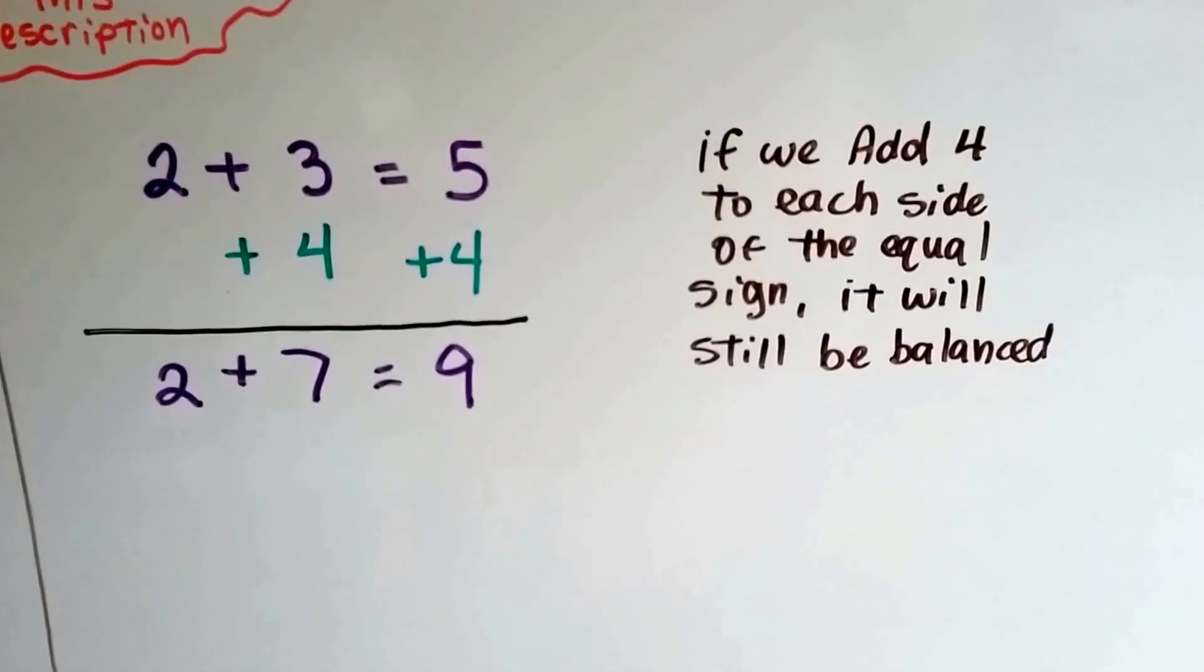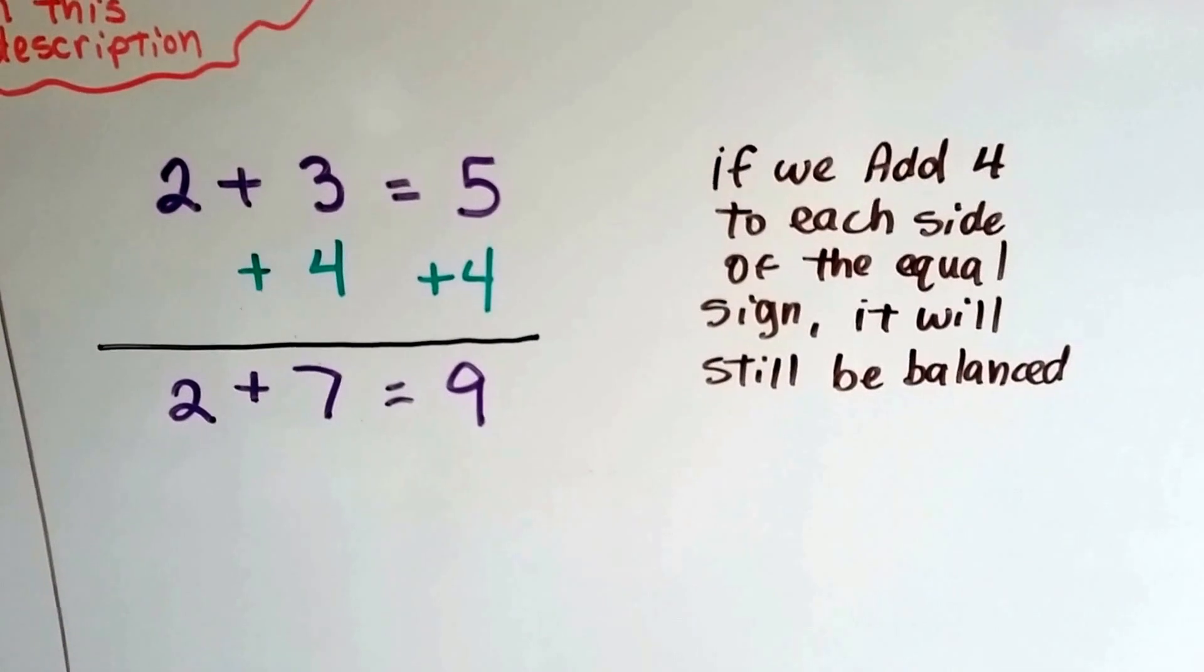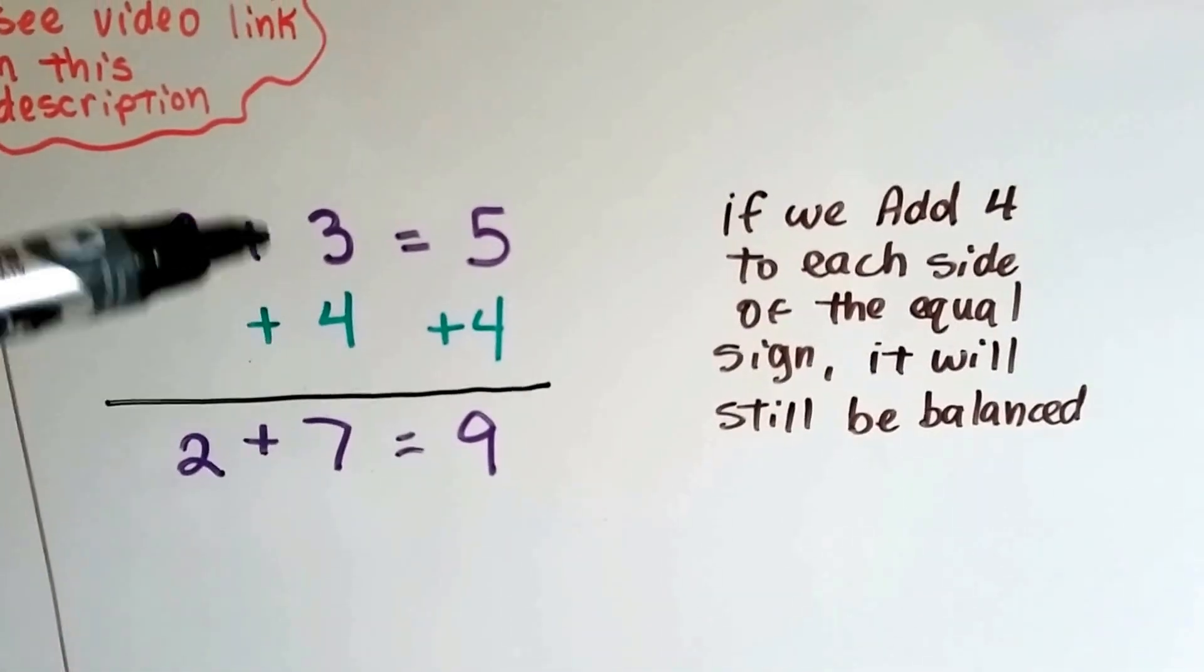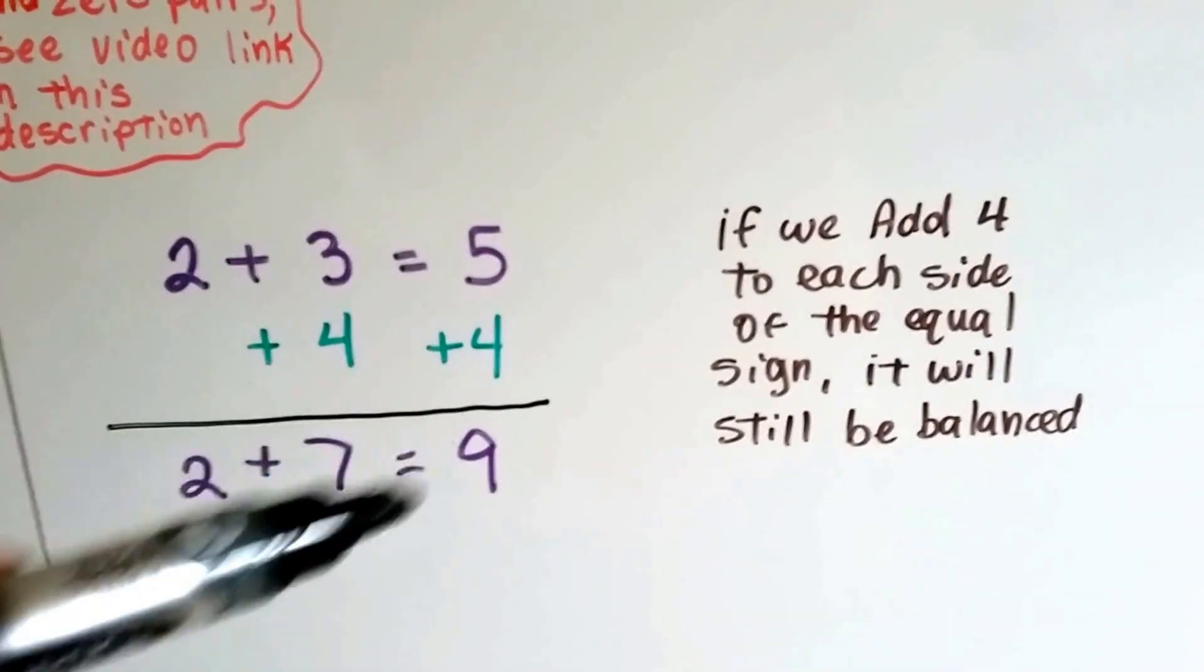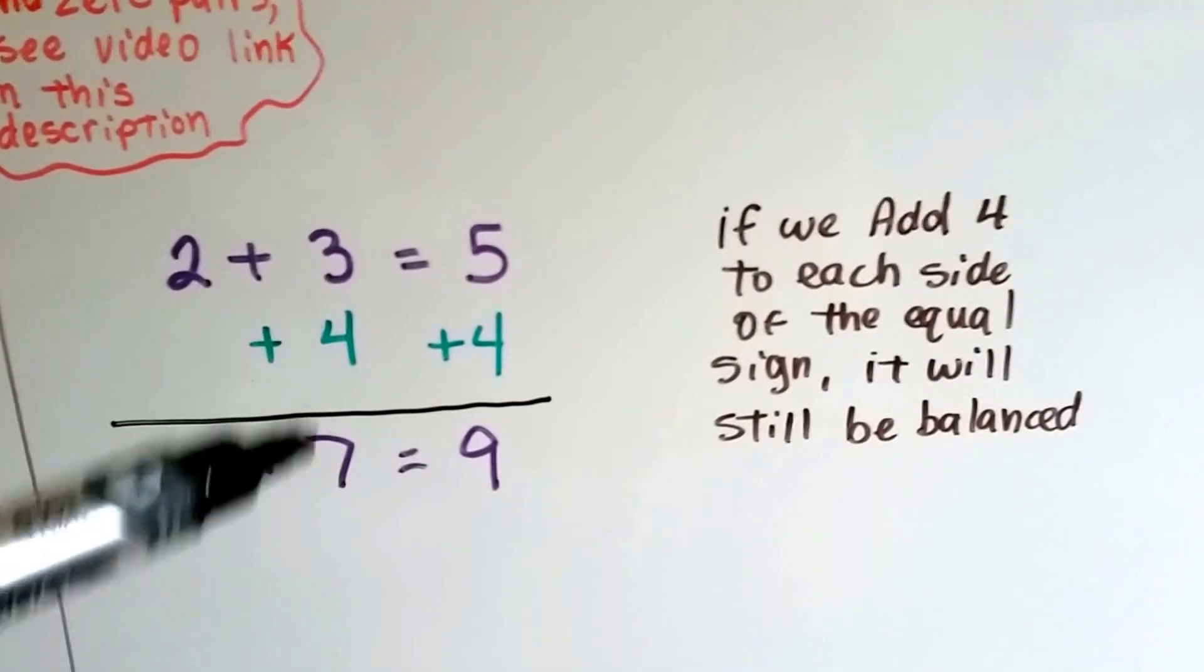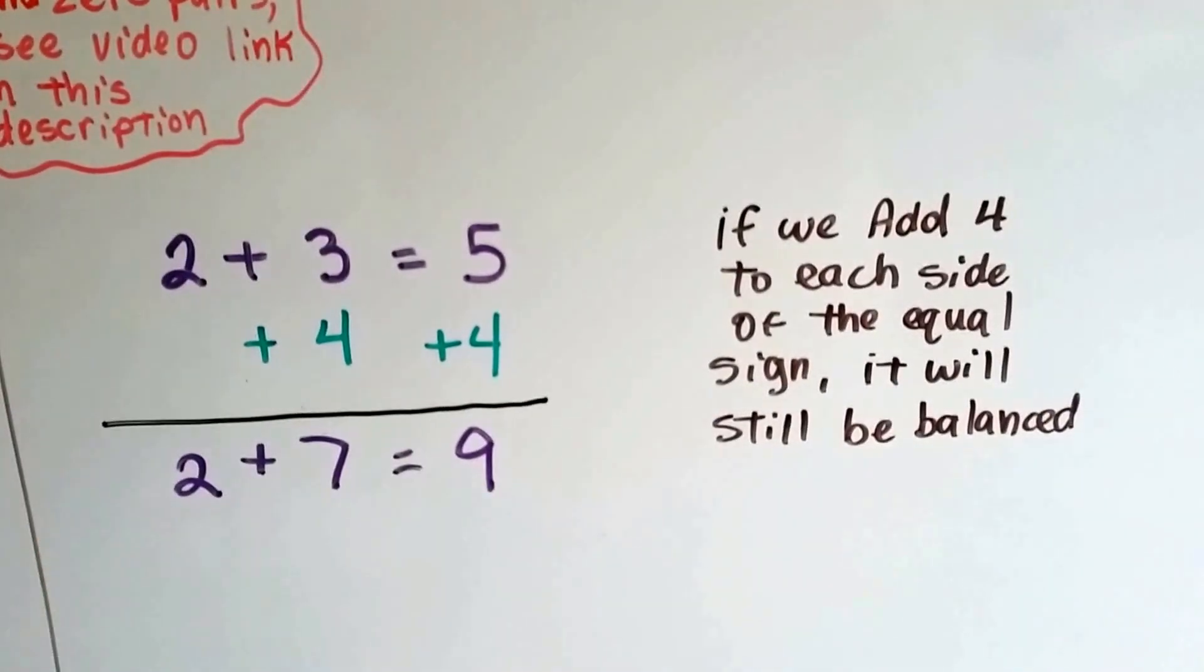If we add 4 to each side of the equal sign, it'll still be balanced. If we have a 4 added to this side and a 4 added to this side, we end up with 2 plus 7 equals 9. It's still balanced.